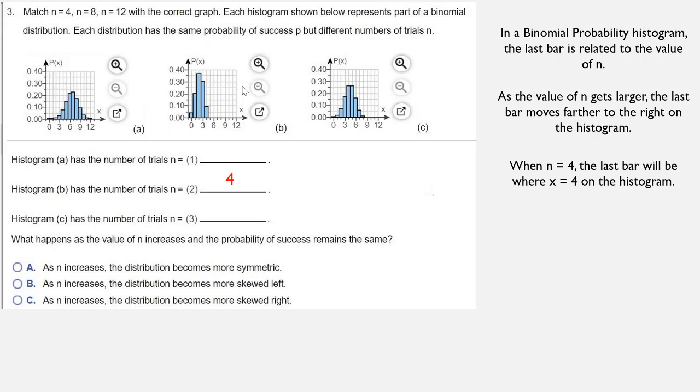When n is equal to 8, the last bar will be where x equals 8 on the histogram. Looking at the histograms we have, that fits graph C. So graph C has 8 trials.